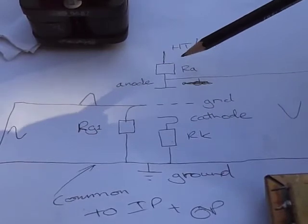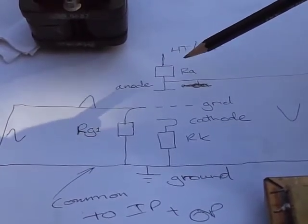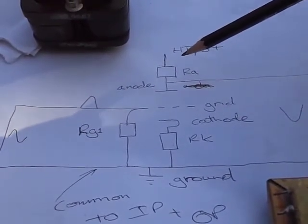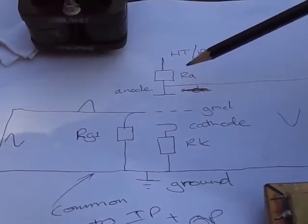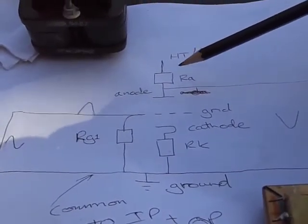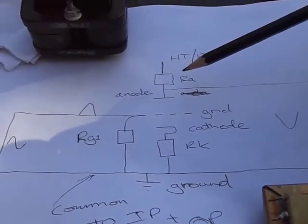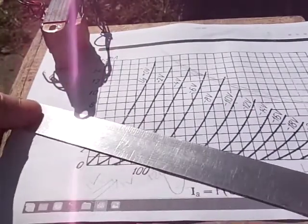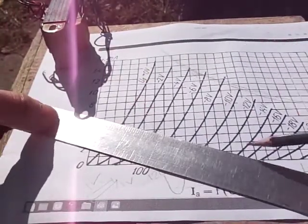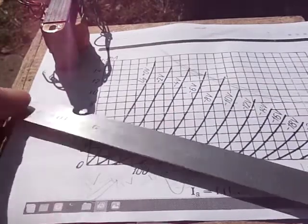Before we go on to draw the load line, when choosing the anode resistor, the bigger our anode resistor, the higher the gain. So if we use a 100k, we'll get more gain than if we use a 50k resistor. Let's move on and draw the load line. I've just drawn the preliminary load line there, trying to bisect each of these grid lines at about 90 degrees.